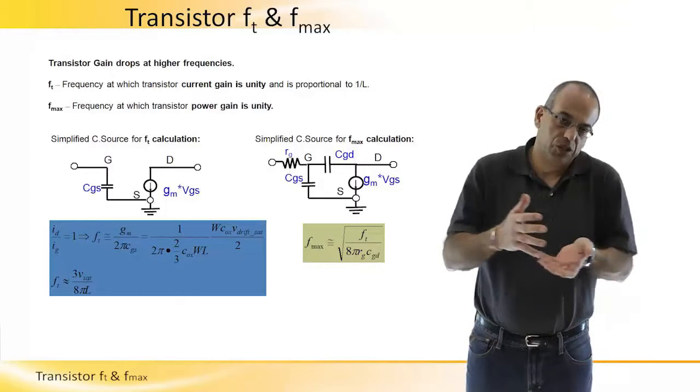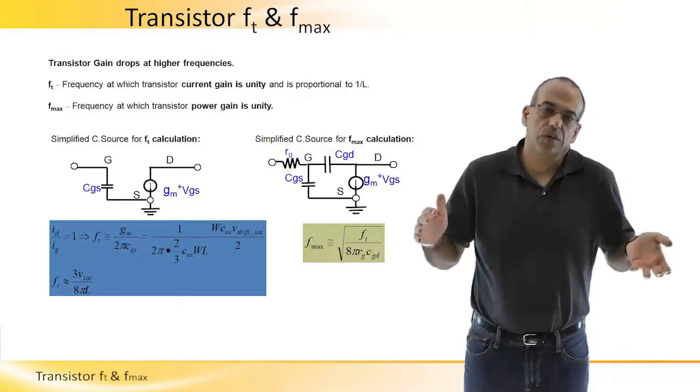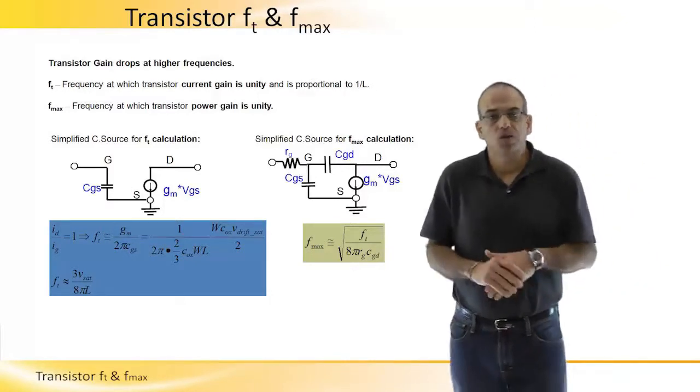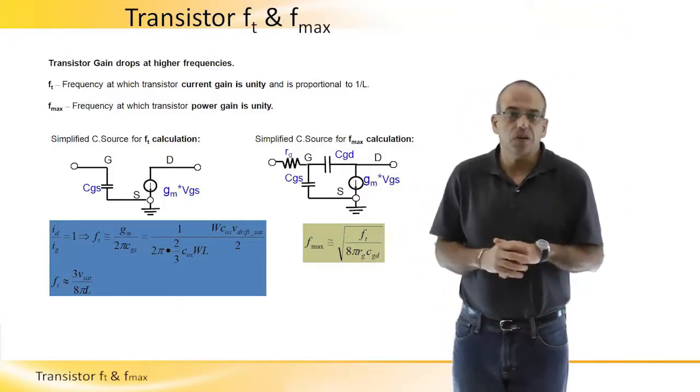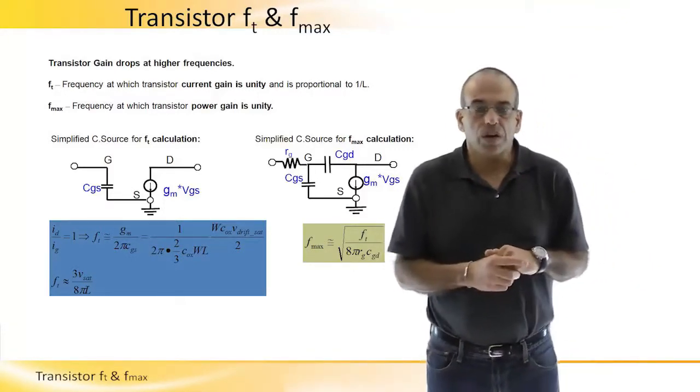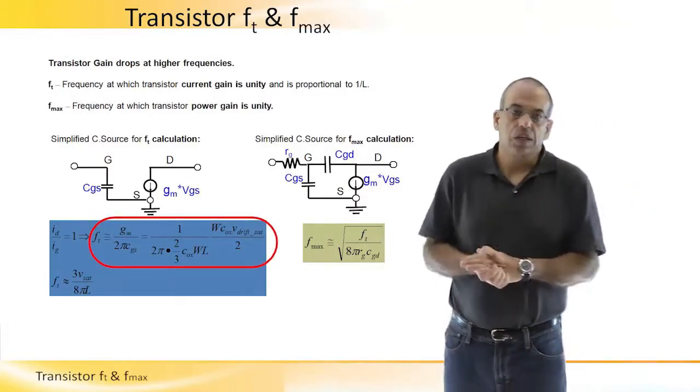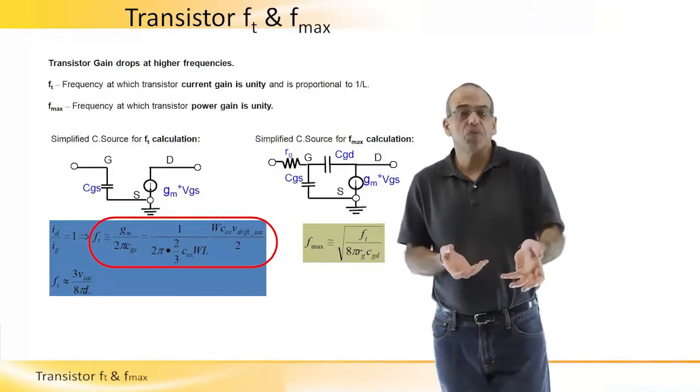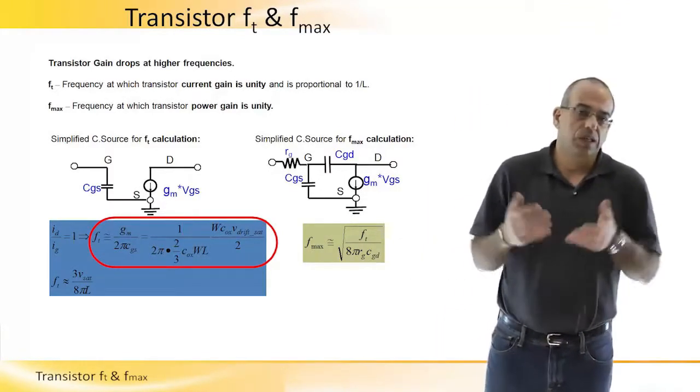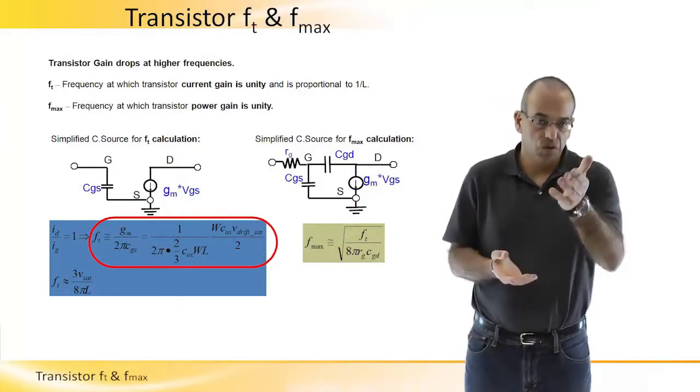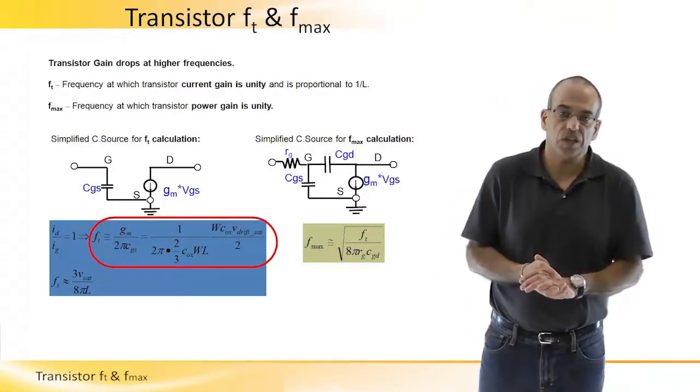So we now understand that the current gain is not constant and it's frequency dependent. By doing some simple calculations, we can find that this Ft or transition frequency is reversely proportional to the channel length of the transistor, which is reflected in the equation as L.